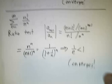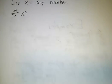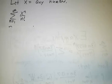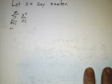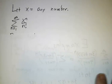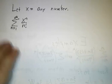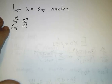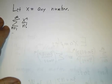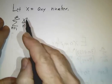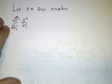For our last example, we're going to look at a sum. Pick a number x — it doesn't matter what it is — and we're going to look at the sum of x^n over n factorial. Does that converge? Well, the ratio test works pretty well here, similarly to the last one.